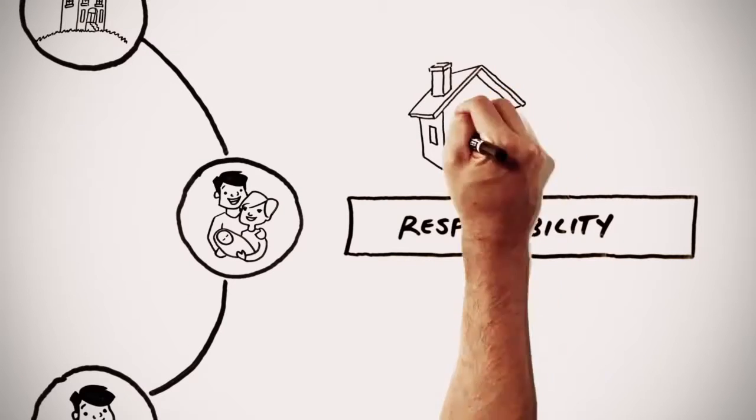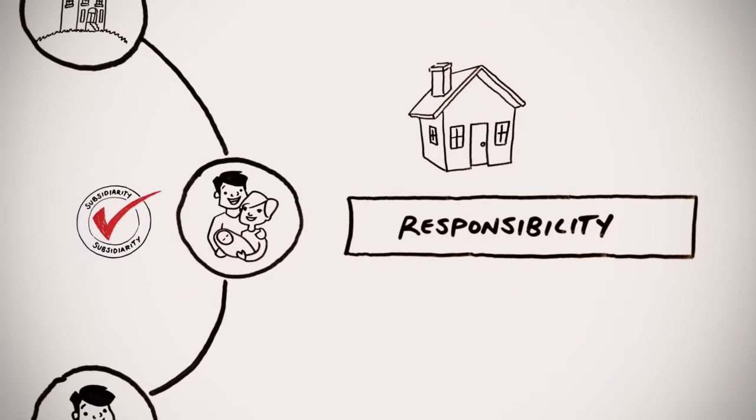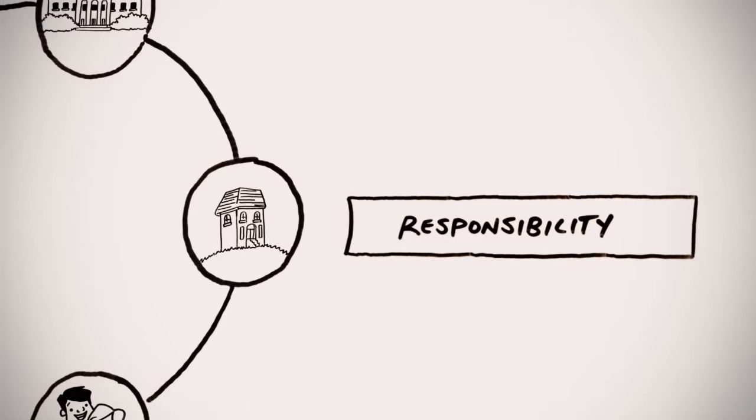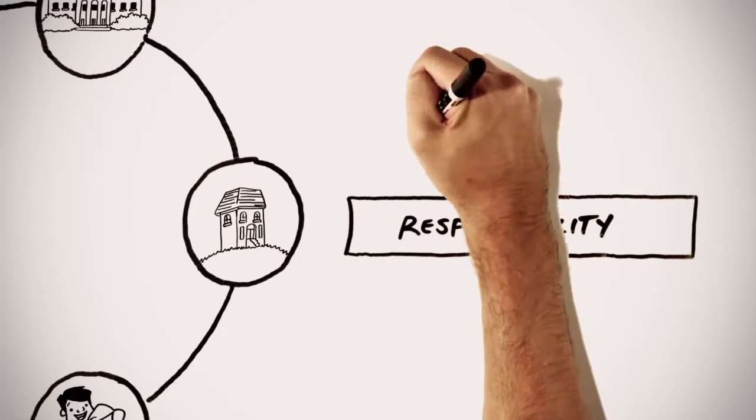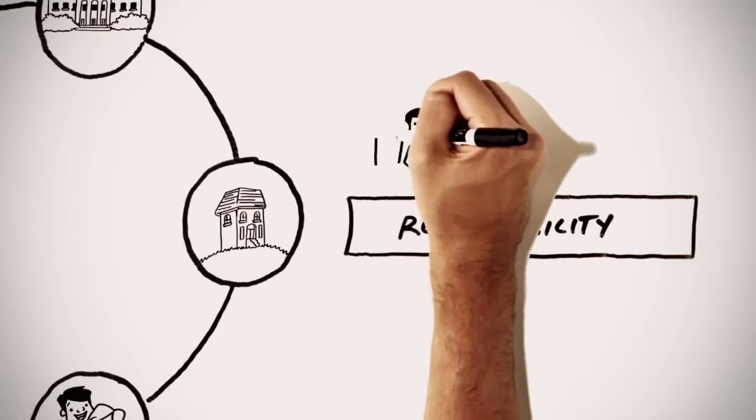Families are in charge of deciding where they want to live. Larger authorities like churches, community organizations, and local governments should do those things that individuals can't do alone.